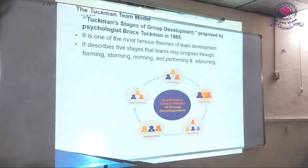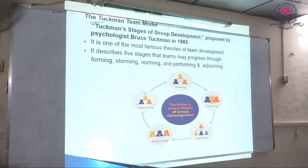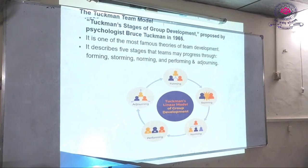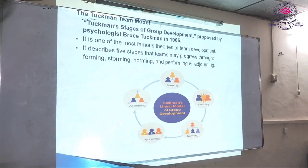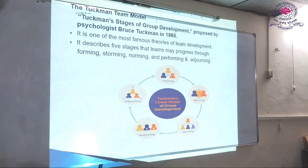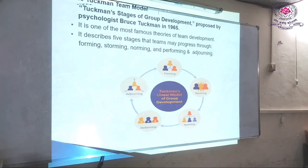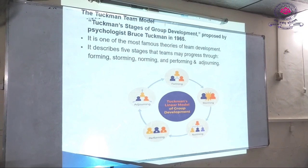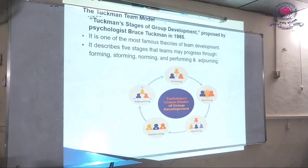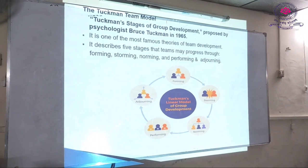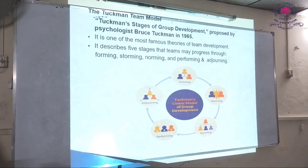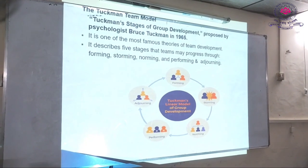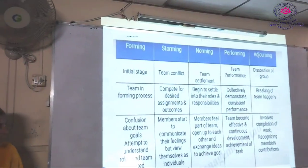Another concept is the Tuckman team model. Tuckman's stages of group development was proposed by psychologist Bruce Tuckman in 1965 and is one of the most famous theories of team development. It describes five stages that teams may progress through: forming, storming, norming, performing, and adjourning. Let us now discuss each stage.